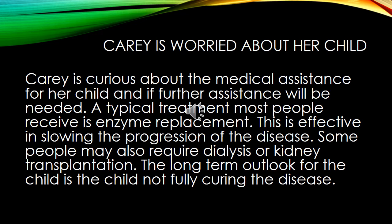Carrie is worried about her child. She is curious about the medical assistance for her child and if further assistance will be needed. A typical treatment most people receive is enzyme replacement therapy, which is effective in slowing the progression of the disease. Some people may also require dialysis or kidney transplantation. The long-term outlook for the child involves managing the disease, as it cannot be fully cured.